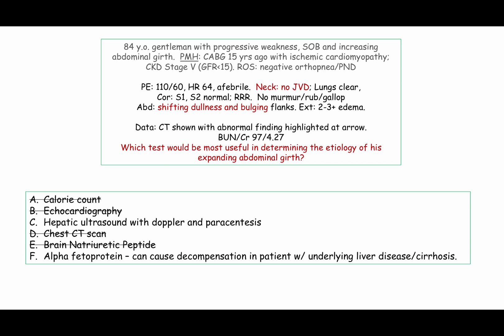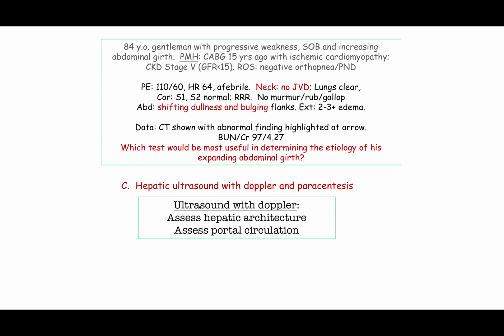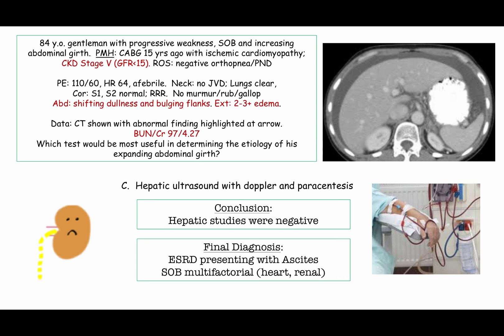In so far as alpha-fetoprotein, this tumor marker is associated with hepatocellular carcinoma. Whereas hepatocellular carcinoma can cause decompensated liver disease with ascites, the first step would be to evaluate the liver directly. So the correct answer is C — hepatic ultrasound with Doppler imaging, which gives us the ability to assess both the hepatic architecture and vascular flow. I also performed a diagnostic paracentesis to exclude the possibility of intraperitoneal malignancy. As all his liver studies were normal, this patient's final diagnosis was ascites secondary to end-stage renal disease, for which hemodialysis was initiated.